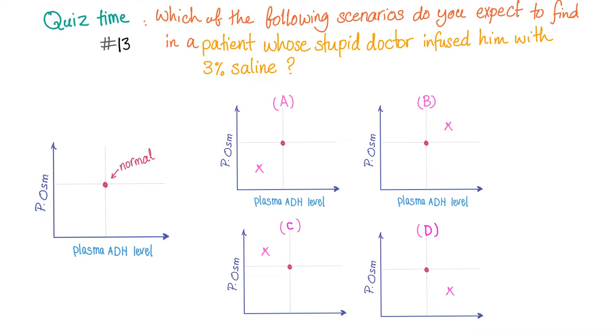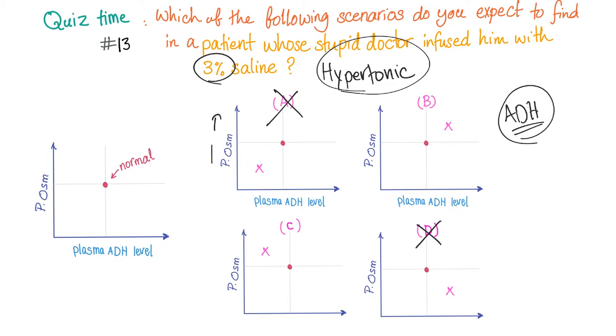But first, let me answer the question of last video. Which of the following scenarios do you expect to find in a patient whose stupid doctor infused him with 3% saline? As you know, 3% saline is hypertonic. Its osmolality is greater than that of the plasma. So, once you infuse this, what's going to happen to the plasma osmolality? It has to increase. So, A is wrong and D is wrong. It's either B or C. Now, the plasma ADH level, the most important stimulus for the release of ADH is hypertonicity. And now, we have hypertonicity. So, of course, ADH is going to go up and the answer here is B.